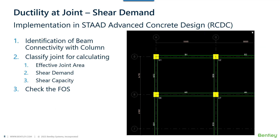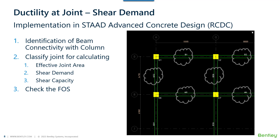Now let's look at how this is done in RCDC. The first step is to identify a joint and the beams framing into that particular joint. For example, in this figure, column C1 has beams on two sides, column C2 has beams on three sides, and column C7 has beams on four sides. This is how a joint is identified — by a column and its corresponding beams and their connection directions — which links to the classification of joints as having two, three, or four beams framing in.